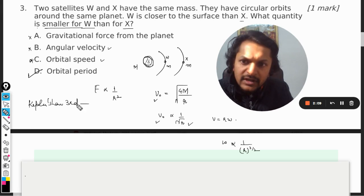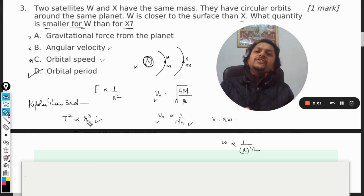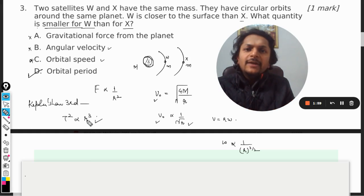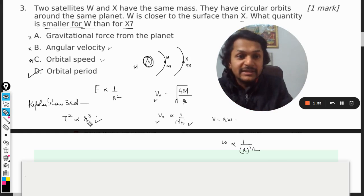Kepler's third law. And that Kepler's third law is that T square is directly proportional to r cube. So if the radius is lesser, time period will definitely be lesser. They are directly proportional and they are related by this law.